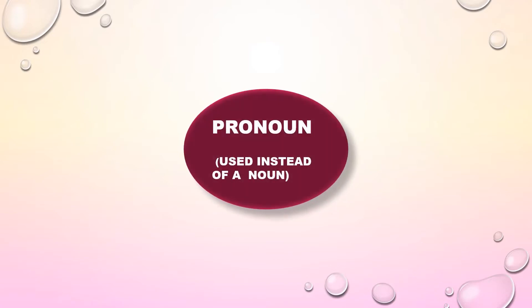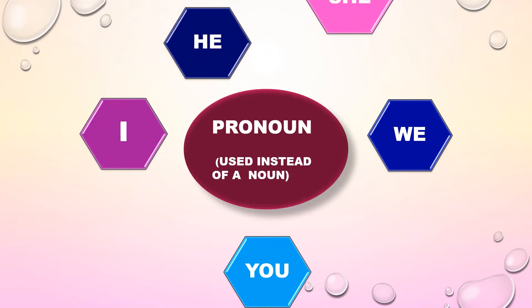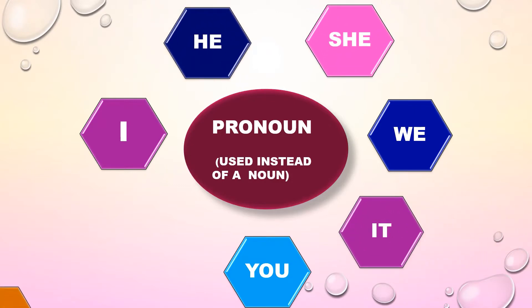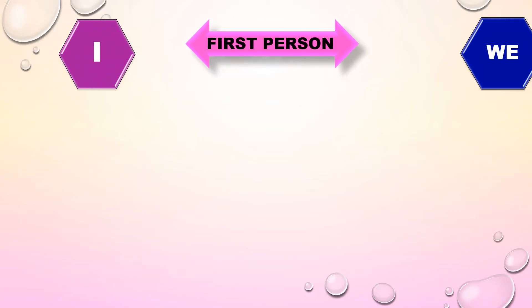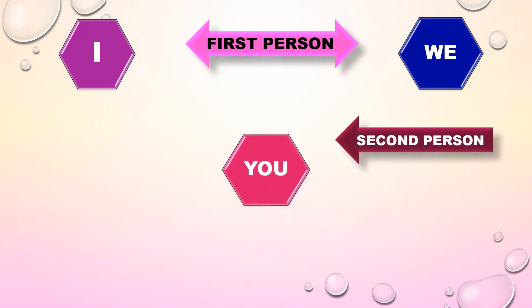Now let us see pronoun. A pronoun is a word that is used instead of a noun. I, we, you, he, she, it, they — these are called personal pronouns. The pronouns I and we, which denote the person or persons speaking, are said to be personal pronouns of the first person.